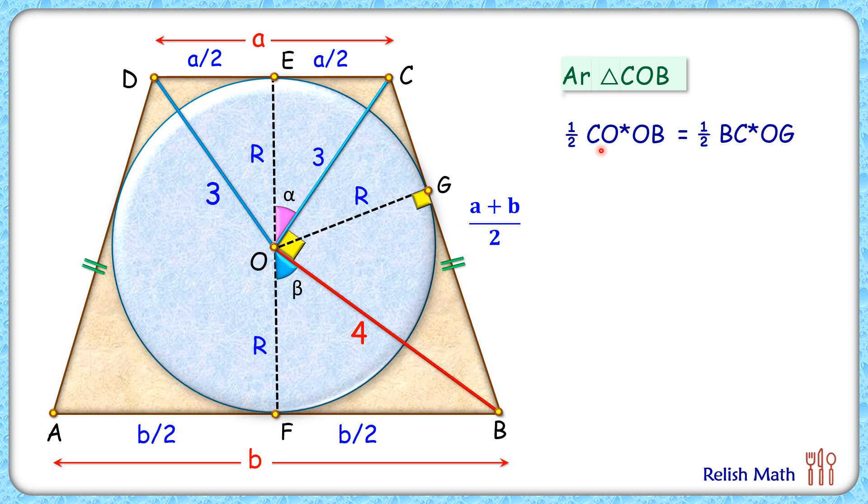Now here putting the values CO is 3 and OB is 4. So half of 3 times 4 is the area. BC is A plus B by 2 and OG is radius R. So this is half of A plus B by 2 times R. Simplifying it, we'll get R times A plus B is 24.